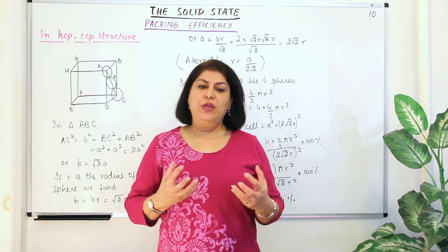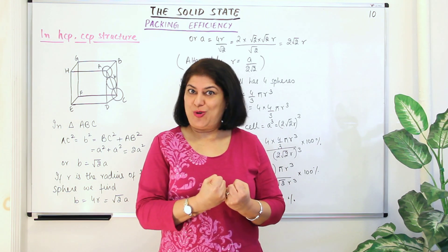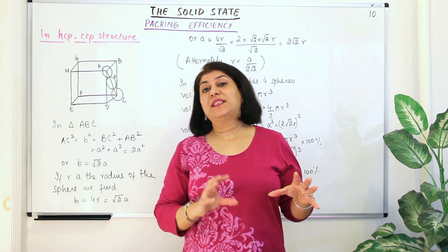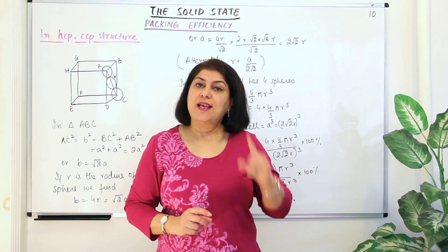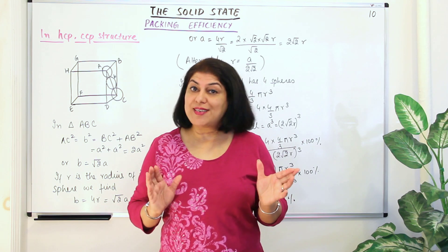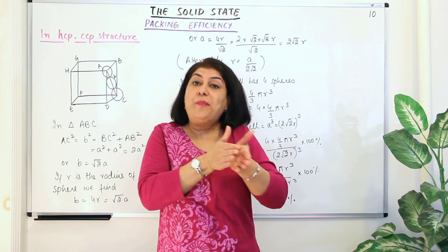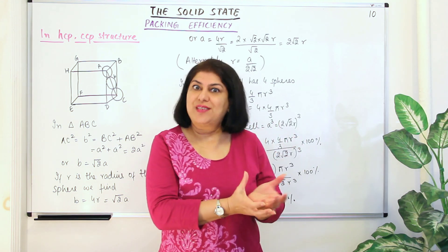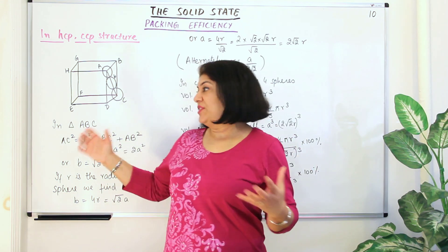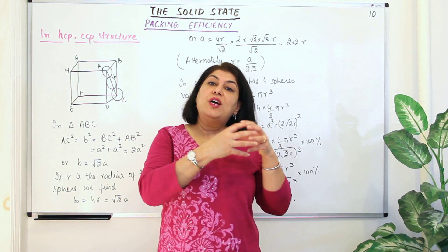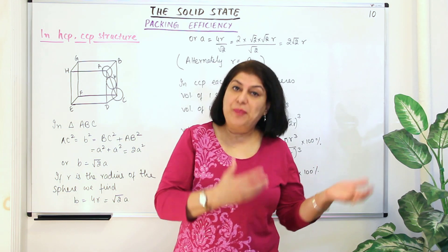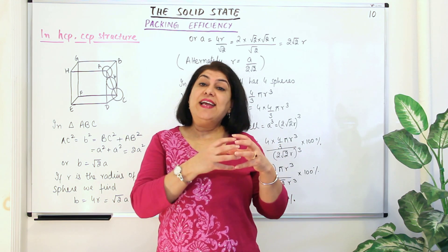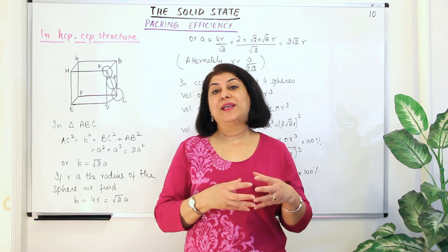So when is a solid going to be a harder or more efficiently packed solid? A solid in which the voids are minimum and most of the volume in the unit cell has been occupied by the constituent particles would have a more efficient packing. The better packing or more compact arrangement, the stronger and more stable the solid — the harder the substance. So any crystal which has a more compact arrangement is more efficiently packed. Efficiency of packing tells us how densely the constituent particles in the unit cell are arranged.